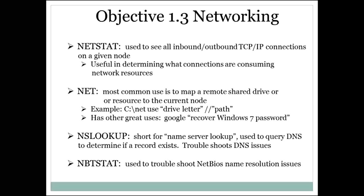Next, let's talk about Netstat. From a command prompt, if you type netstat, you will see all your inbound and outbound TCP/IP connections on a given node. It's really useful when you want to find out what connections are consuming your network resources, and it's very good for finding overactive applications or applications that aren't supposed to be communicating but are. If you type NET from a command prompt, you can map a network resource to a drive letter.